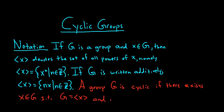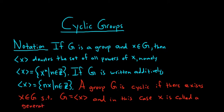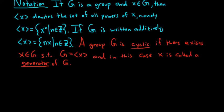In this case, x is called a generator of big G. In other words, x generates big G, so g is the set of all powers of x. A cyclic group can have more than one generator, so let's look at various examples of cyclic groups.